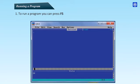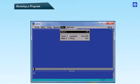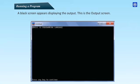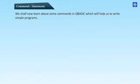Running a program: To run a program you can press F5 or click on run menu, then start. A black screen appears displaying the output. This is the output screen.